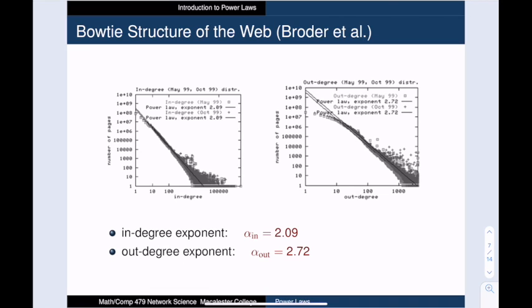The World Wide Web is an example of a network whose degree distributions look like power laws. In this network, we join two web pages by a directed edge when one of them links to the other.